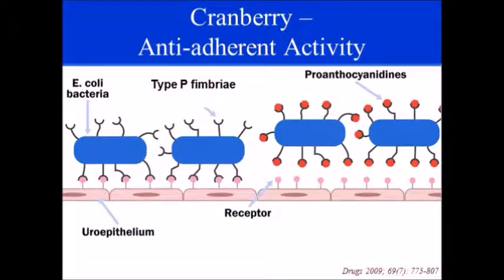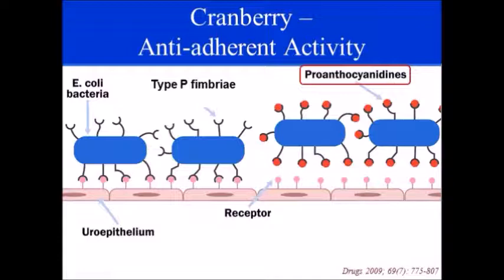The role of cranberry comes into picture here. Cranberry has an anti-adherent property, which means it does not allow bacteria to attach to the uroepithelial wall. The active ingredient of cranberry, proanthocyanidins, gets attached to the adhesions of bacterial cells — shown as red balls over the bacterial cells in the diagram. These proanthocyanidins occupy all the spaces of the adhesions and do not allow any free hand of the bacteria to attach to the uroepithelial wall. Specifically, proanthocyanidins take care of type P fimbria of bacterial cells.